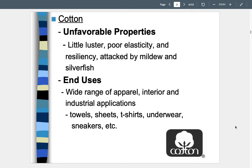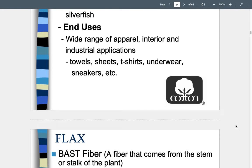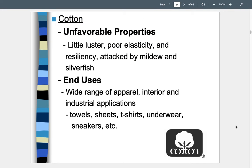End uses of cotton include towels, sheets, underwear, sneakers, diapers, coffee filters, home and car filters, blankets, and facial wipes. Cotton and polyester are the two most important fibers we utilize in apparel and interior applications. Make sure to watch the videos in the module's video section — they show how we process cotton from plant to textile and are really helpful for understanding.